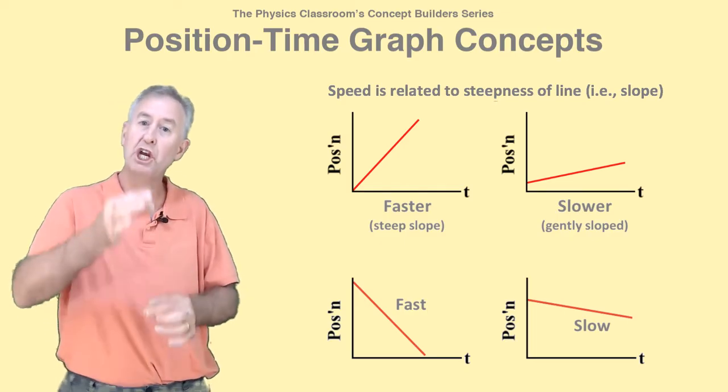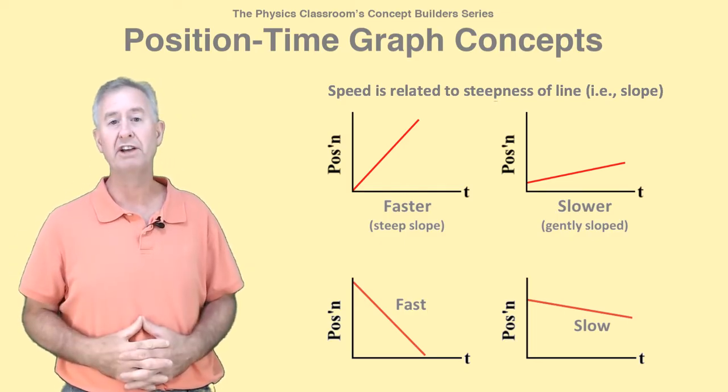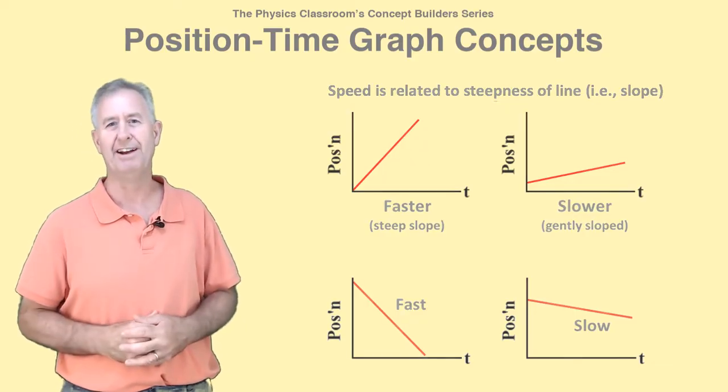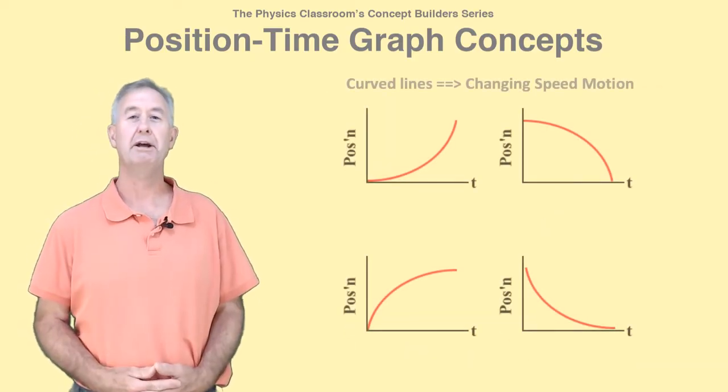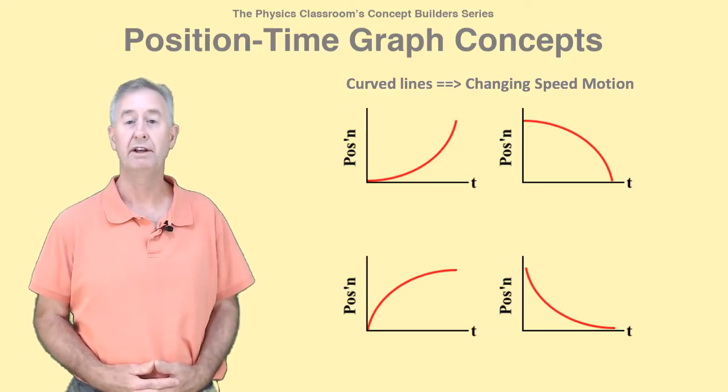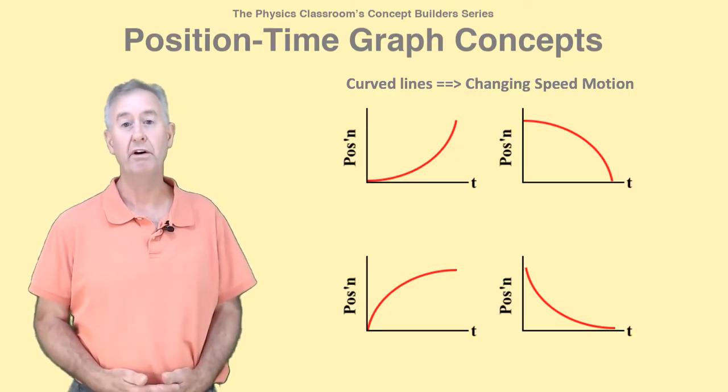You're looking for the biggest change in Y along the vertical axis for any change in X along the horizontal axis. A curved line on a PT graph indicates that an object is changing its speed, like from slow to fast, or fast to slow.